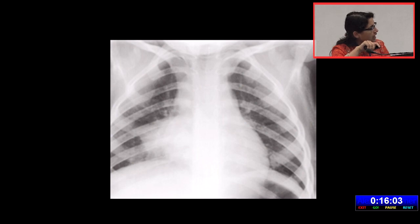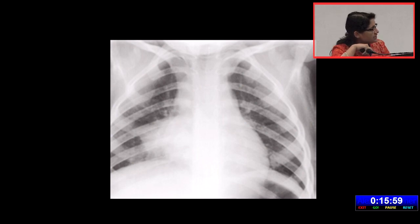There is silhouetting of the right cardiac border with air bronchogram seen in the opacity. This is right middle lobe consolidation.